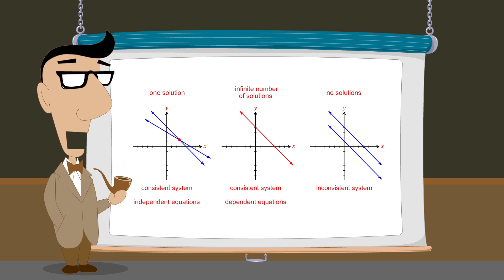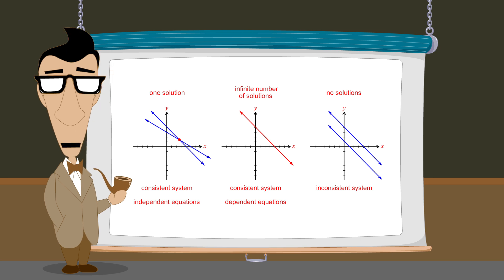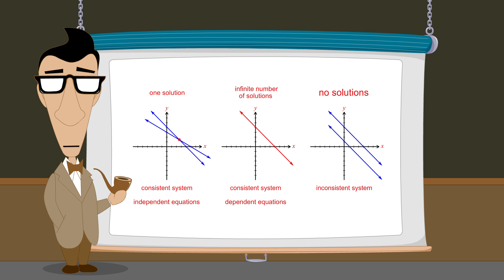In the last lecture, we saw that the type of solutions we should expect can be determined when the equations of the system are written in slope-intercept form. In this lecture, we will see how to interpret the results we get when solving the system to tell if the system has one solution, an infinite number of solutions, or no solutions.